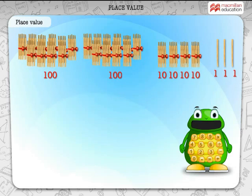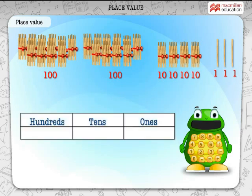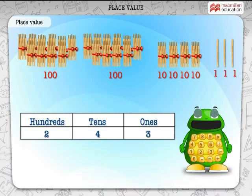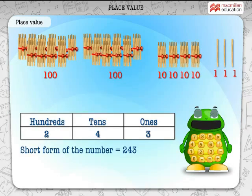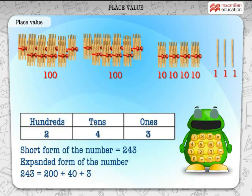Now, let us write this number by putting it in the correct place value under hundreds, tens, and ones. Write down the correct numeral in the hundreds place, the tens place, and in the ones place. What is the short form of the number shown here? 243. What is the expanded form of the number? 243 is equal to 200 plus 40 plus 3.